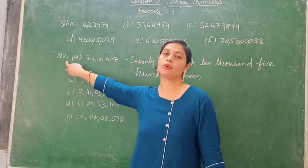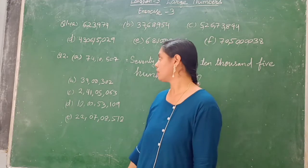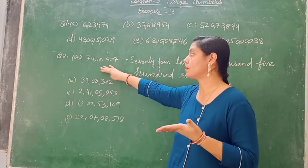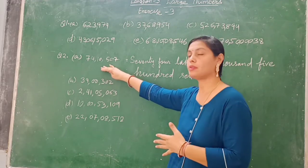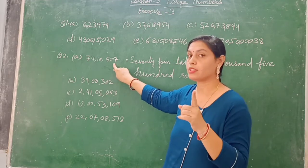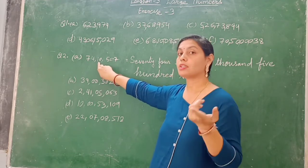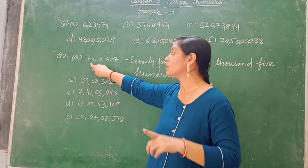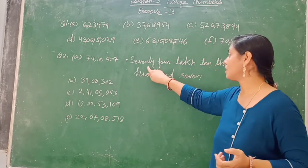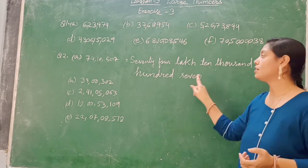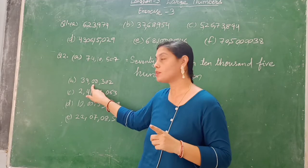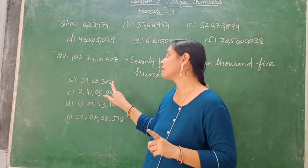Next is question number 2. In question number 2, you have to write the numbers in words. First you must know how to read the number — jab aap number ko padhna jaanenge, toh use likh sakte hain. For example: 507 comes under the ones period, 10 comes under the thousands period, and 74 comes under the lakhs period. So we read it as 74,10,507. Similarly, 39,302.